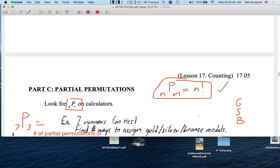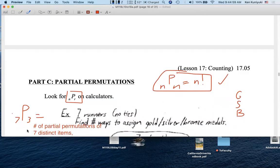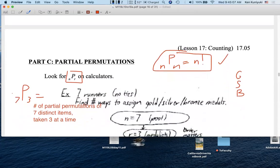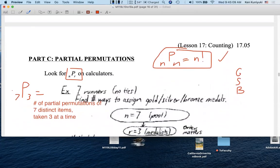So in other words, what is 7P3? The number of partial permutations of seven distinct items taken three at a time. So we have a pool of n equals seven runners. Of these, we have r equals three medalists. And the order matters among the medalists.